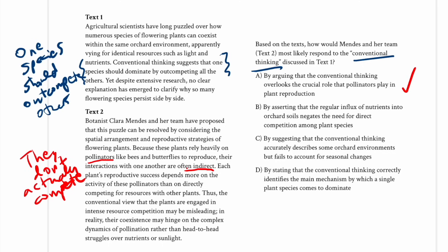As always, we want to check the others. Answer choice B: 'by asserting that the regular influx of nutrients negates the need for direct competition among plant species.' That could support the point that they don't actually compete, but if we scrutinize it, I don't think the passage says anything about a regular influx of nutrients into the soil — it talks more about pollinators — so we can cross that one out.